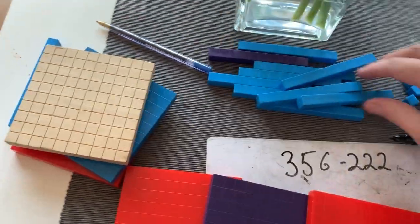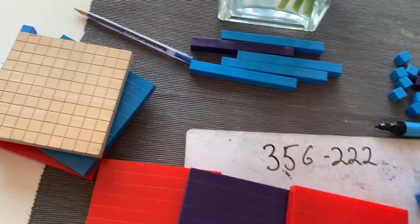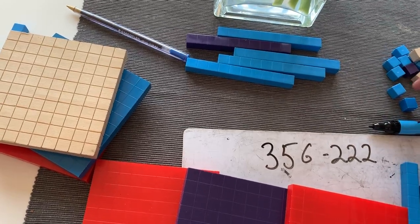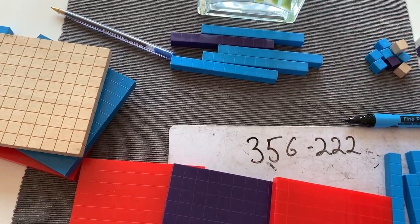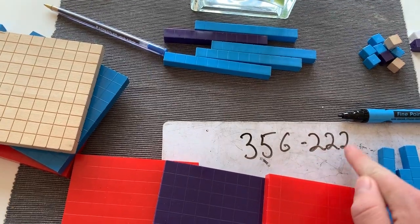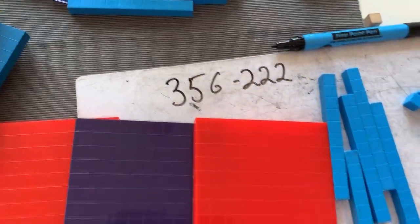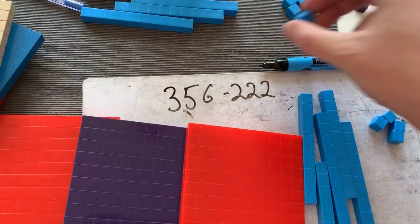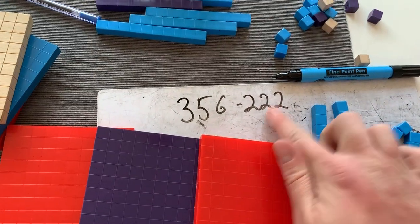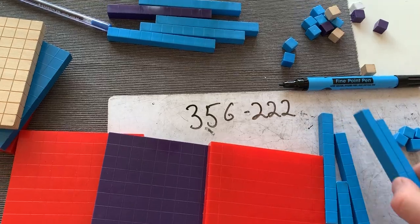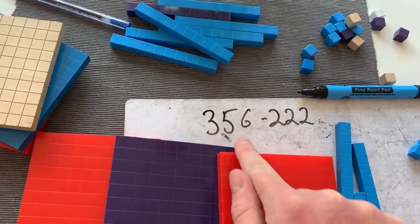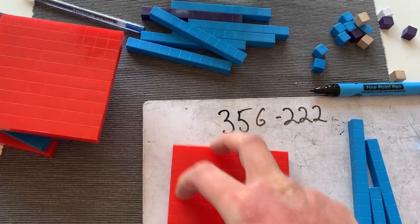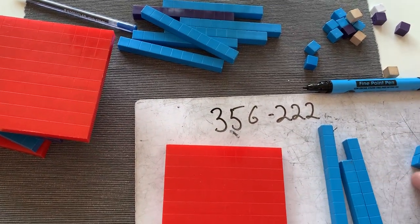So 356 is 5 tens and 6 is 6 ones. It's very strange without hearing children's voice saying it back. And then we're taking away 222. So where do we start? We always start with the ones. So we take away two ones, and then we take away two tens, which is 20, and then we take away two hundreds, which is 200. We are left with our answer of 124.